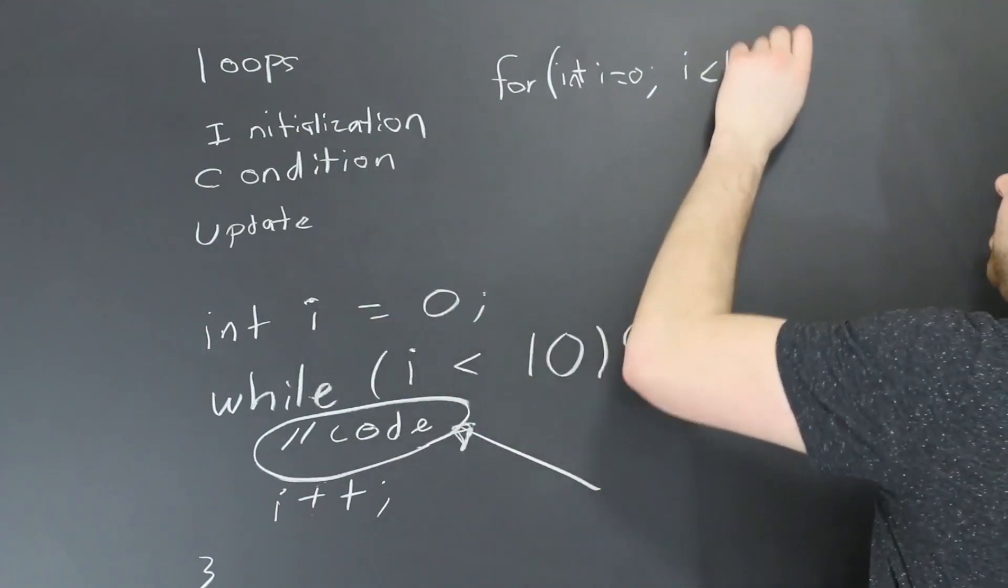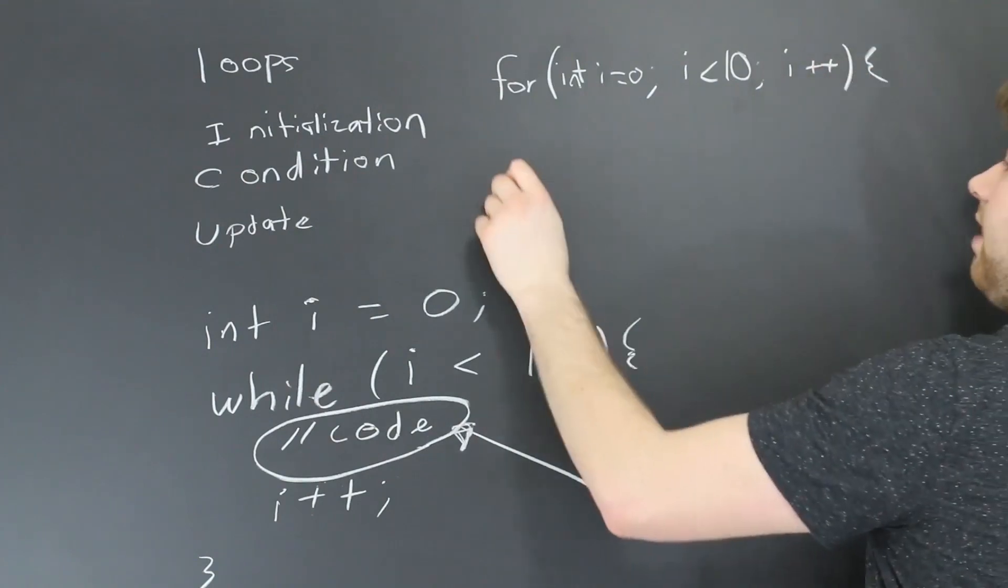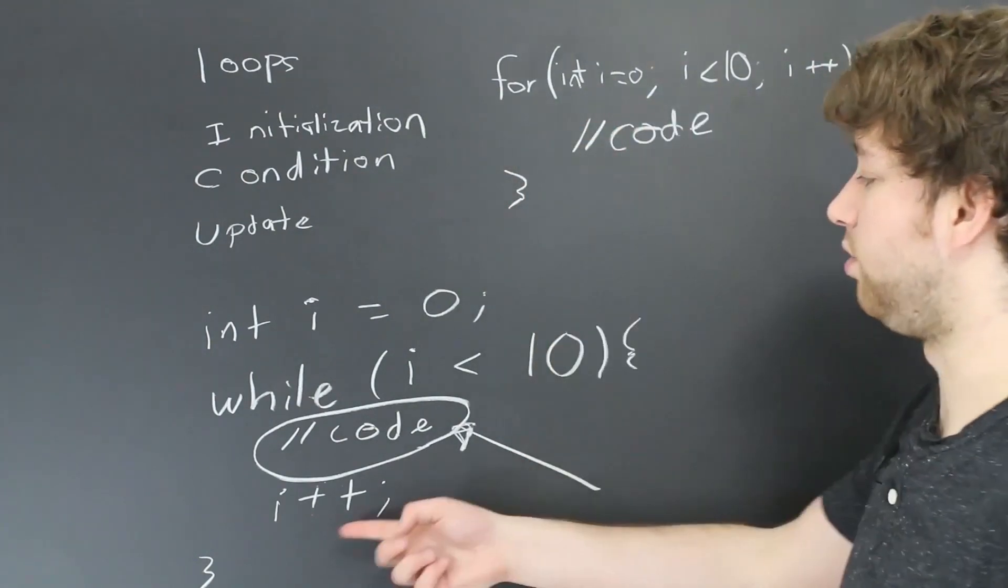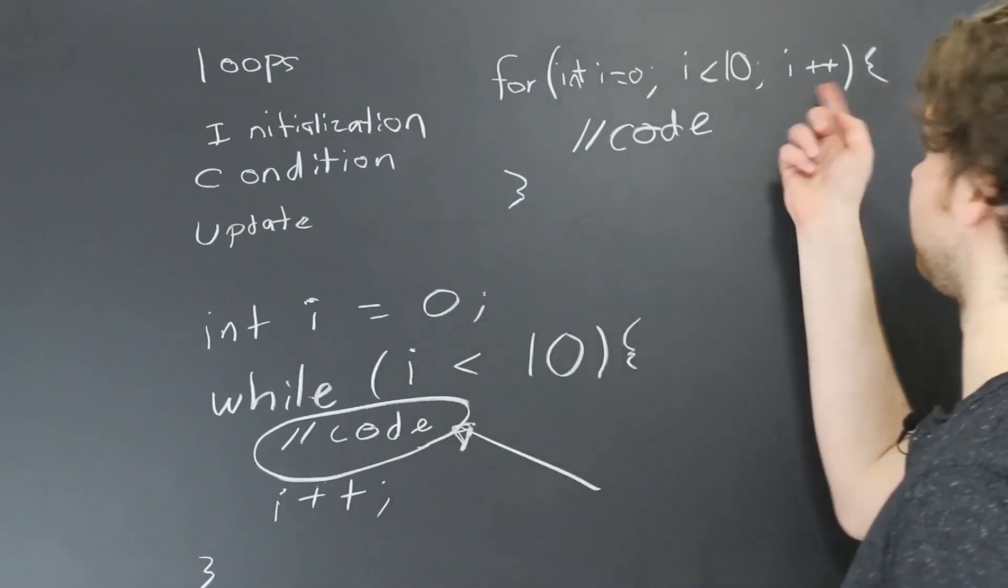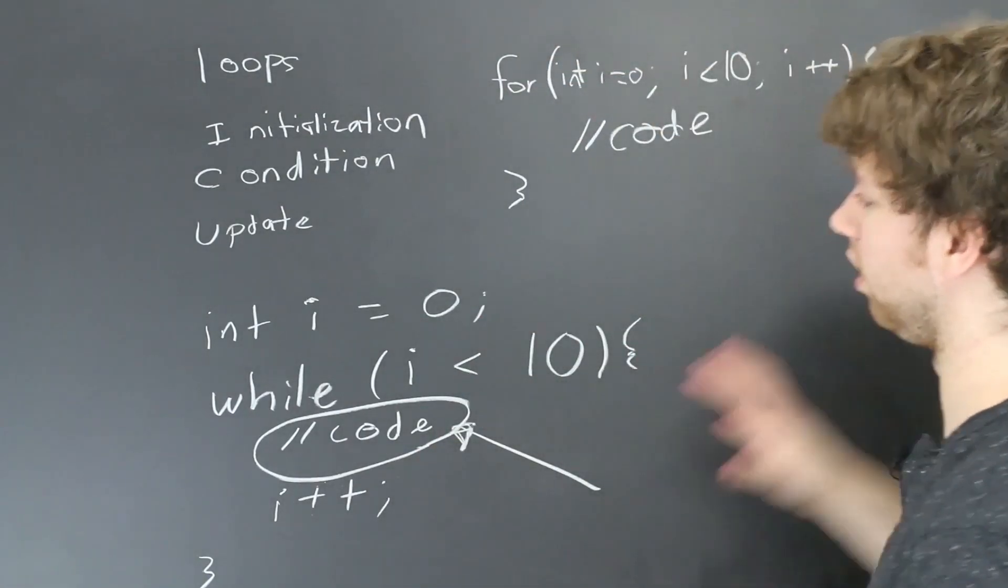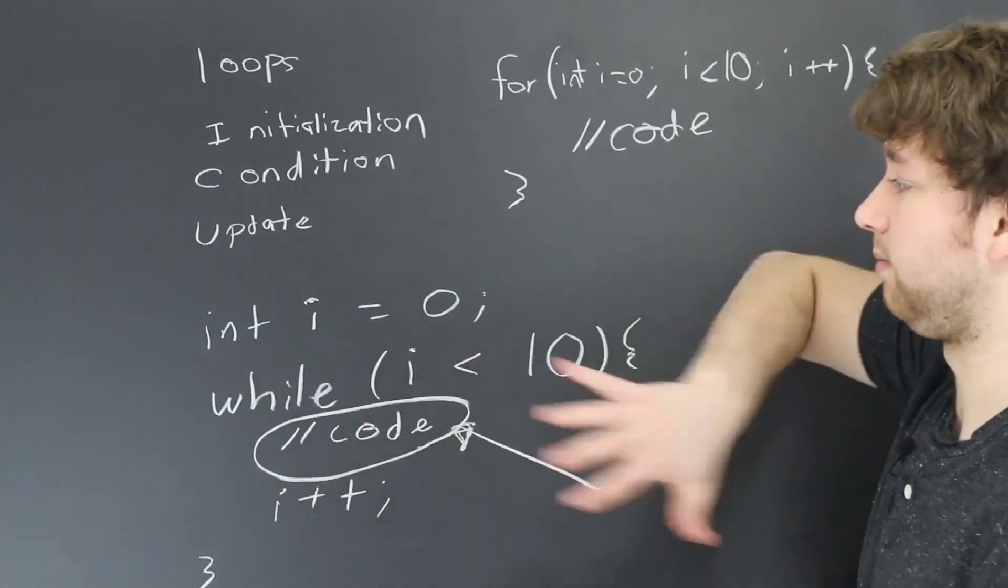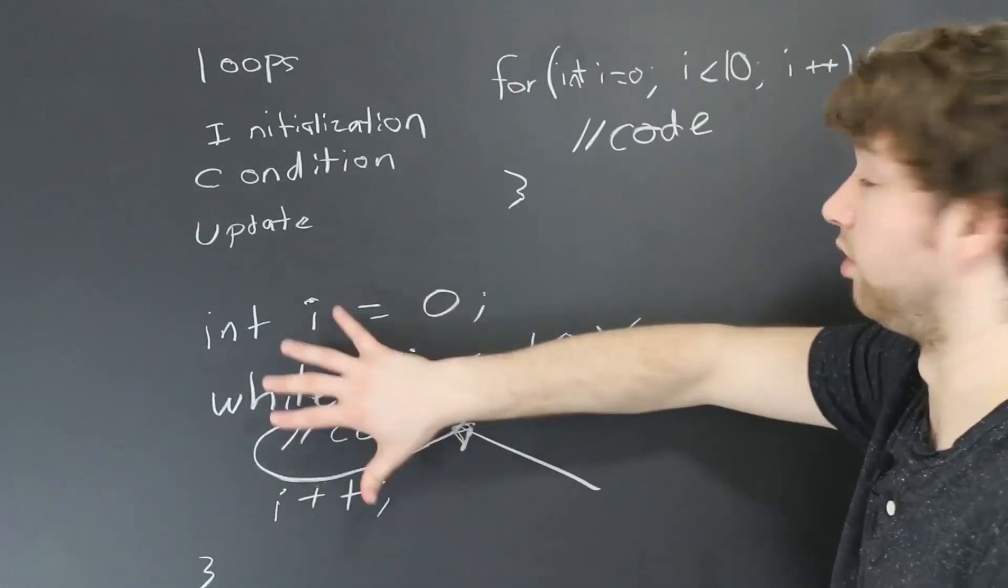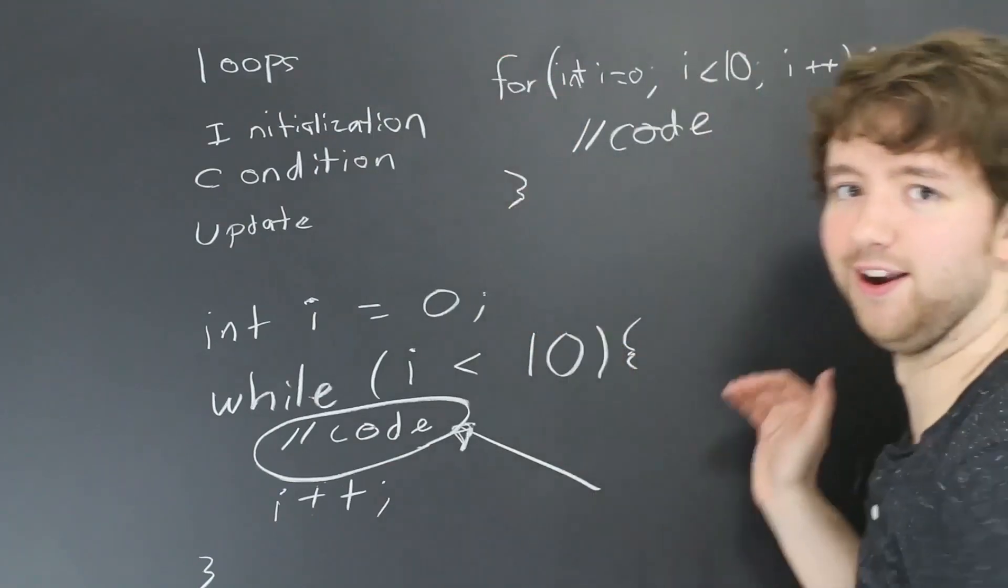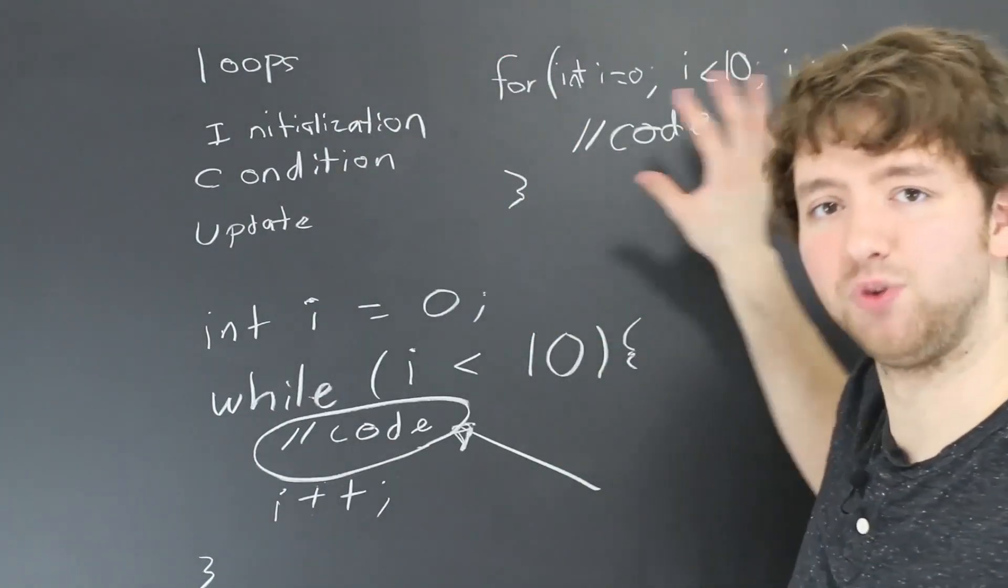And then we have the update, i++. Then we have our code block. And we put our code here. We don't have to do that increment at the bottom, because that's going to happen automatically for us. So this is basically a syntactical sugar for this, because this is very verbose, where we're able to get all of that in one pretty line here.